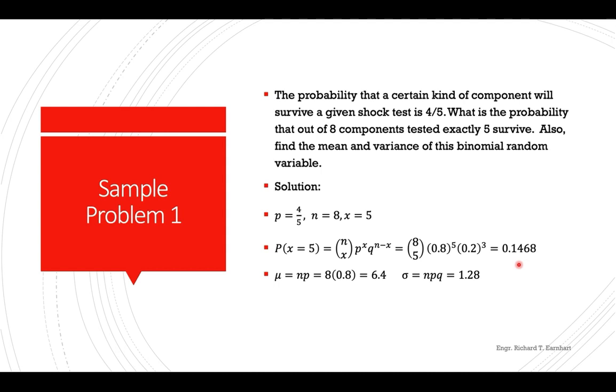And then for the mean, which is np, so n is 8 times 0.8, which is your p, you get 6.4. And then the variance is npq, so multiply this by 0.2, that gives you 1.28.